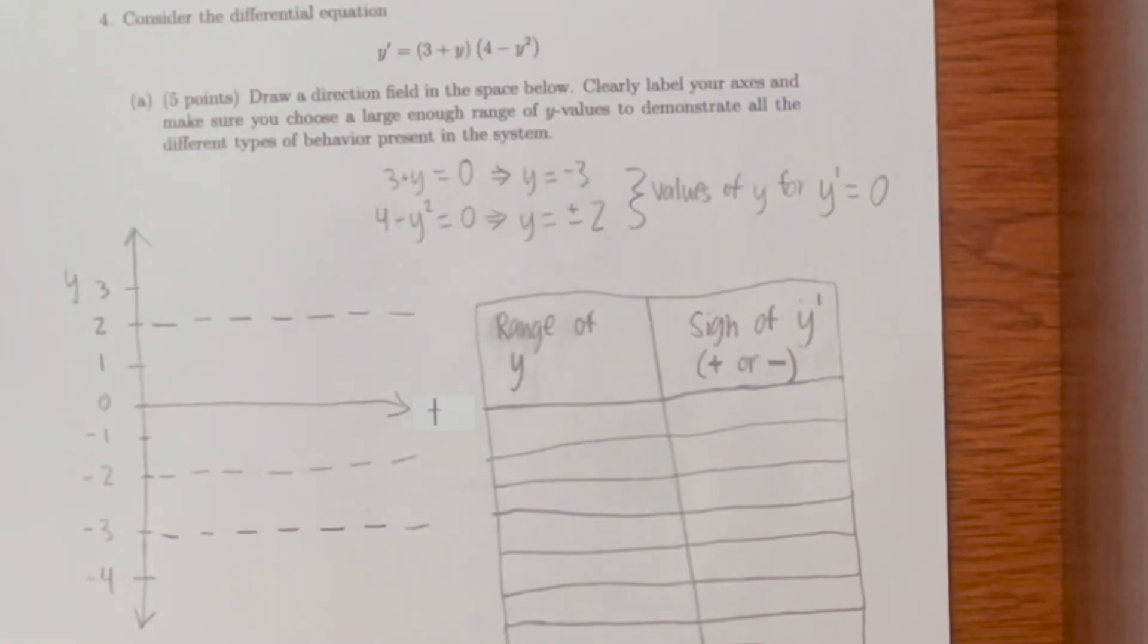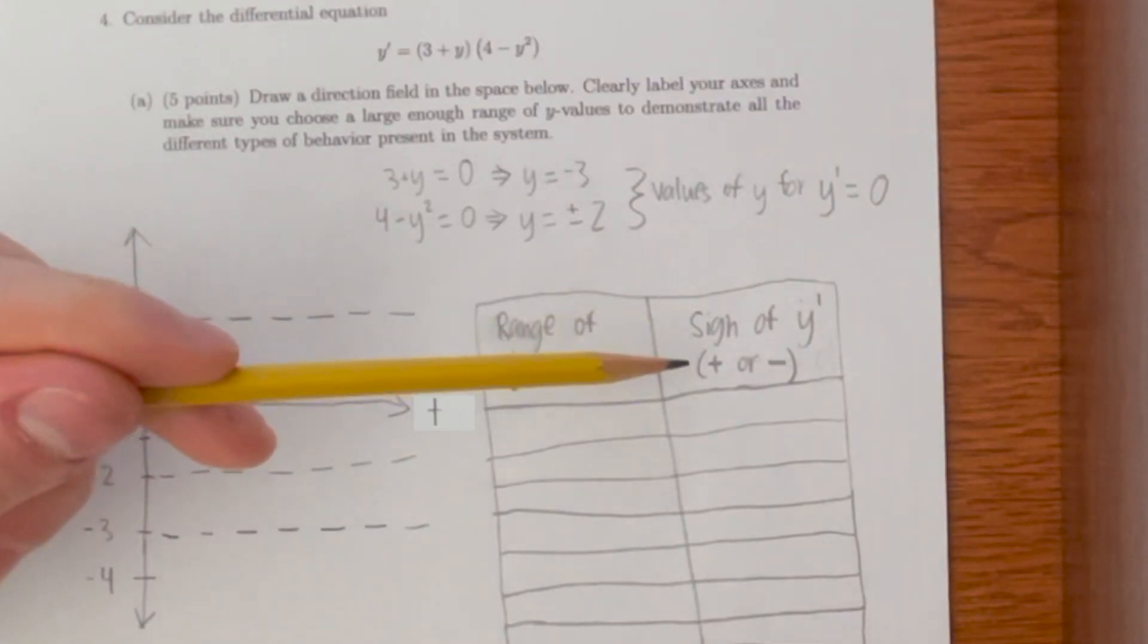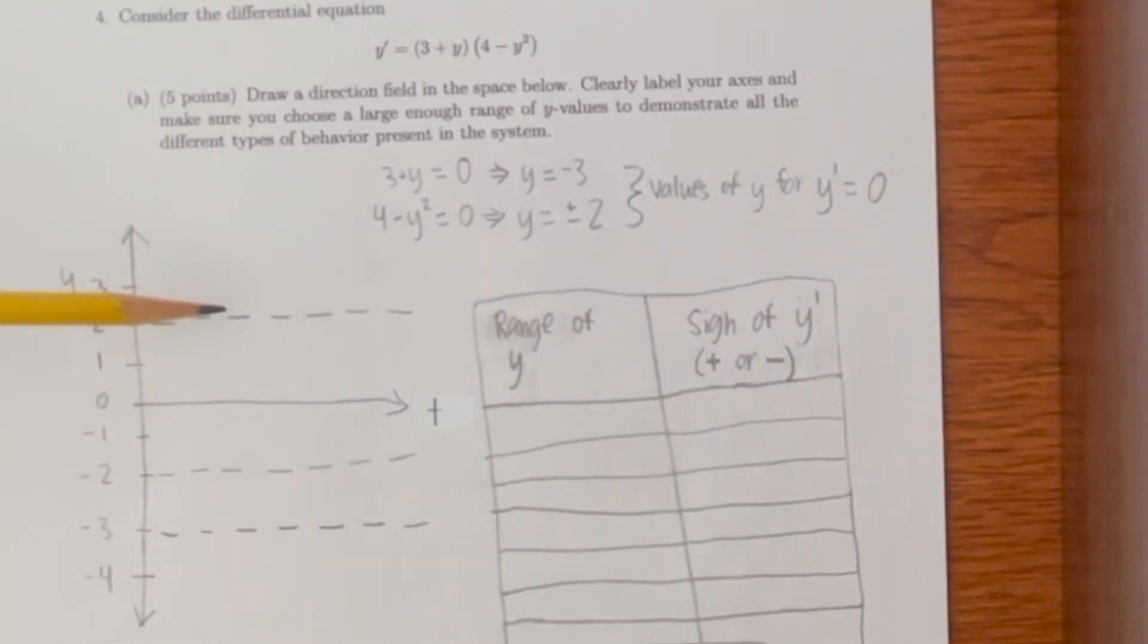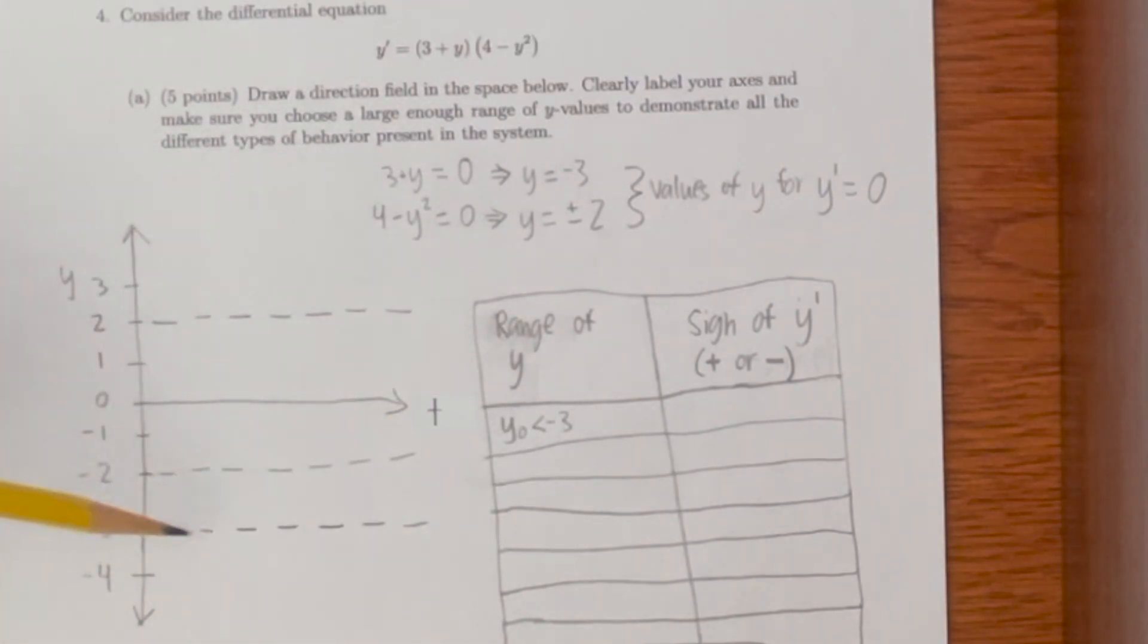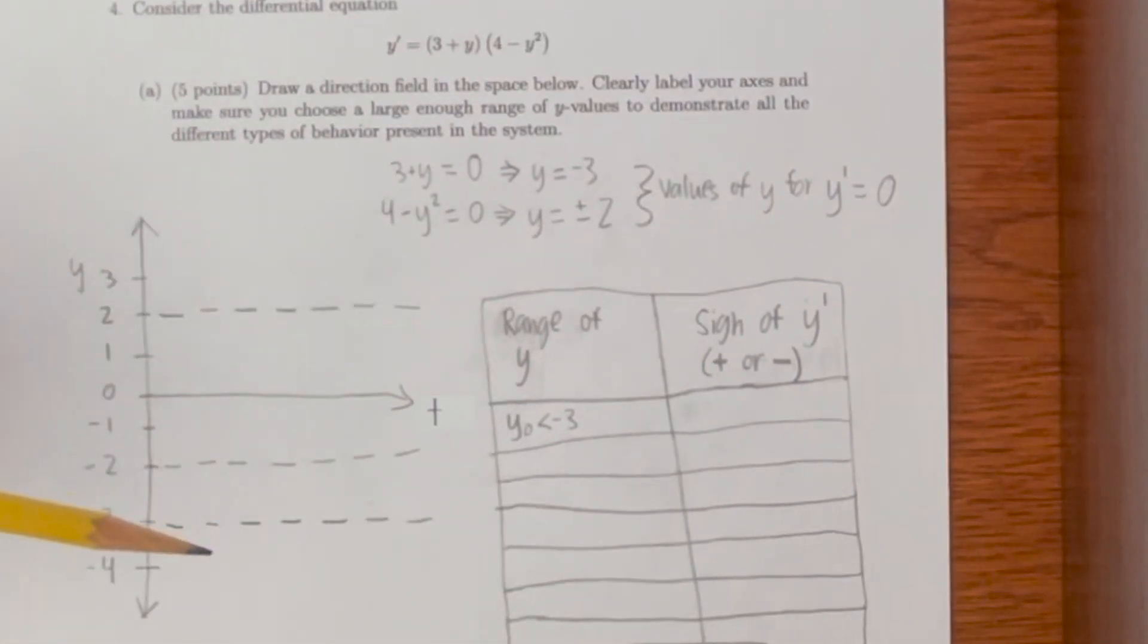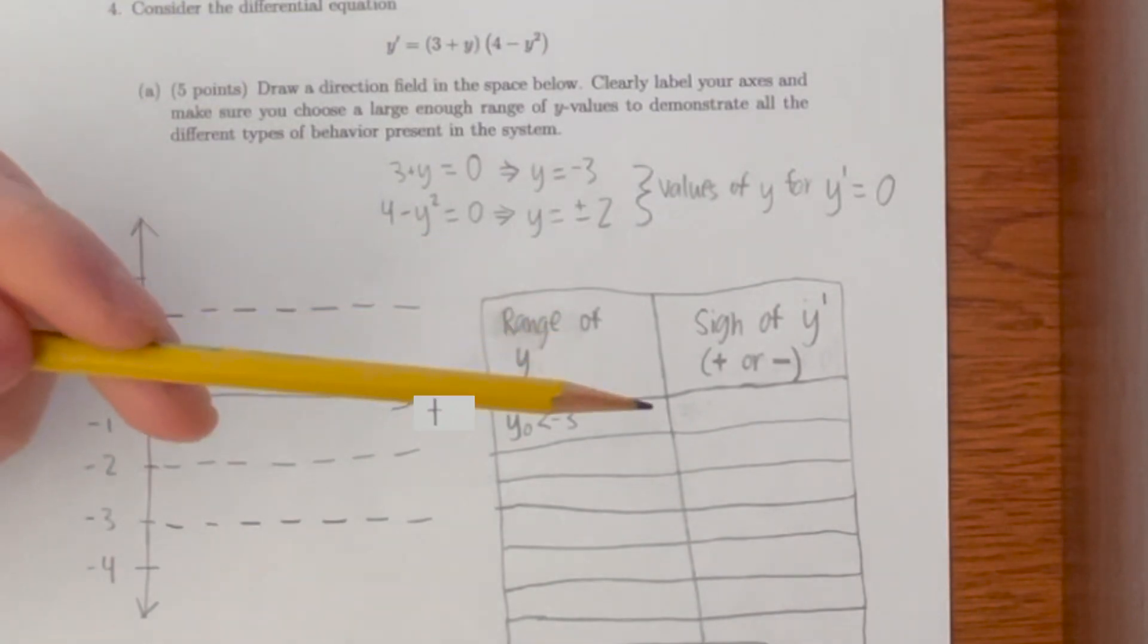Now the next thing we have to do is determine the sign of y prime in the areas between, above, and below these horizontal asymptotes. When y naught is less than negative 3 below this horizontal asymptote, we pick any value of y that's less than negative 3, plug it into the differential equation and see whether it's positive or negative.